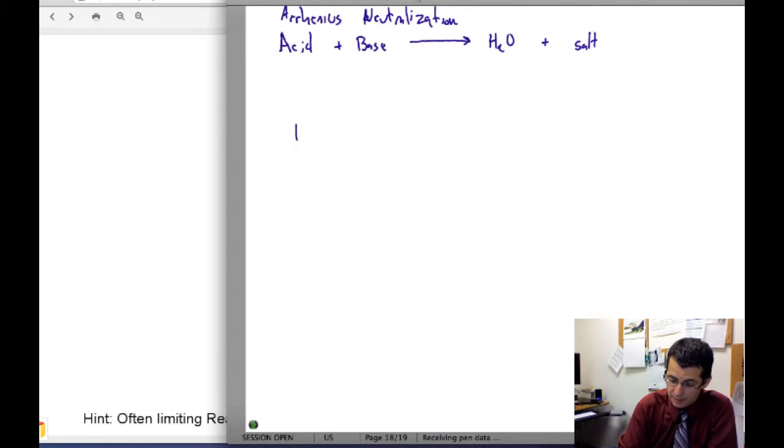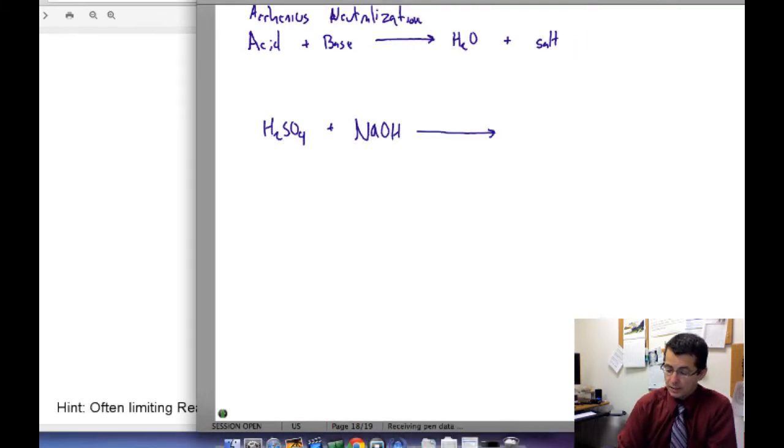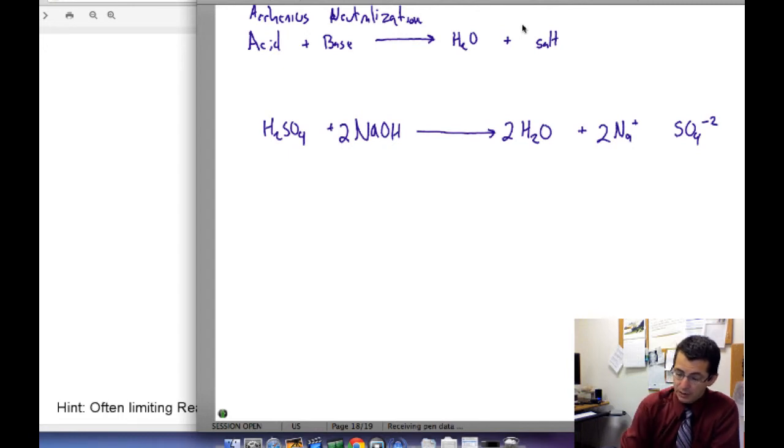If you take something like H2SO4 and react it with sodium hydroxide, you neutralize the hydrogen, create water, and generate Na and SO4. If you go back and balance this out, you find that you consume two sodium hydroxides and generate two waters and create Na2SO4. This would be the molecular equation.